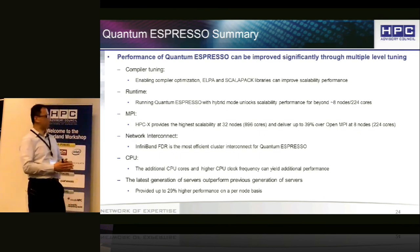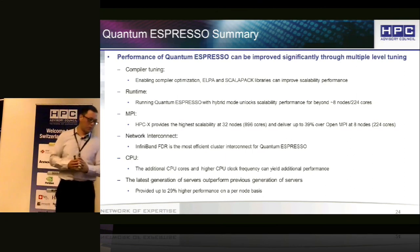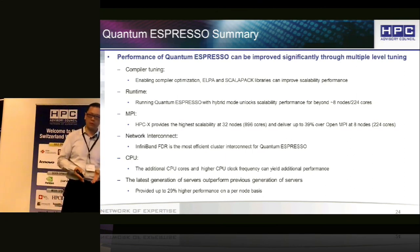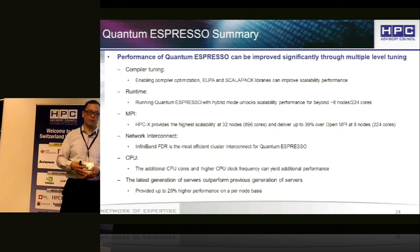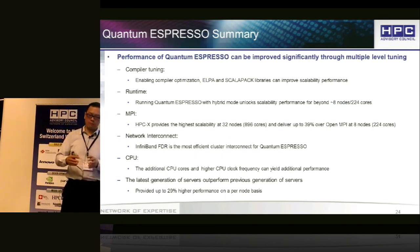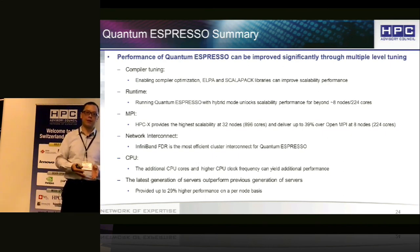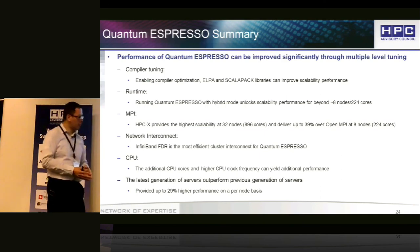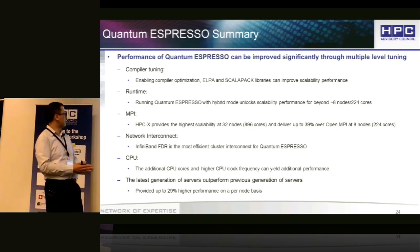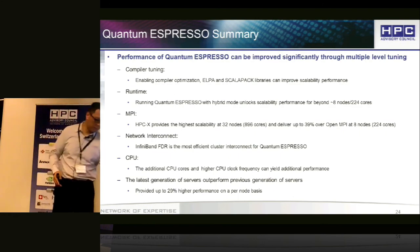In summary: compiler tuning was very important, showing great performance improvement by applying compiler flags and using algebra libraries like ScaLAPACK. Hybrid mode provided scalability improvement, partly because the workload size isn't large enough to scale well across all MPI processes. CPU differences and interconnect choice are also very important factors. That's all for today — thank you.